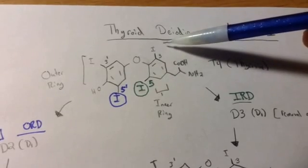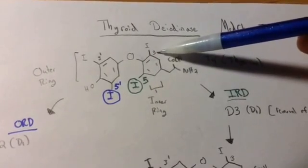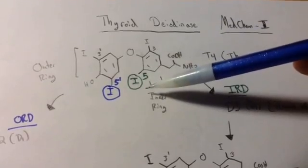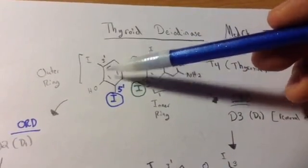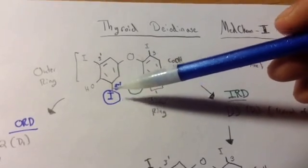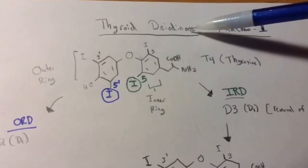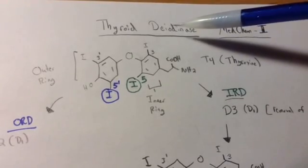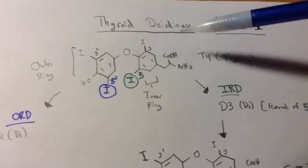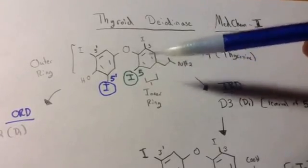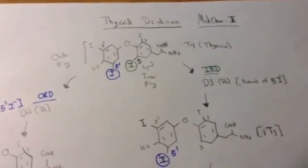So these iodines are numbered. In the inner ring, we just go three is on top and five is on bottom. In the outer ring, we have three prime on top and five prime on bottom. So in order for these deiodinase enzymes to come in, you need to either attack the inner ring or outer ring. So we basically have two separate options here of what we can do.